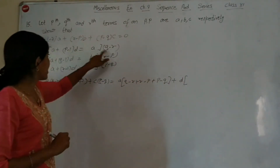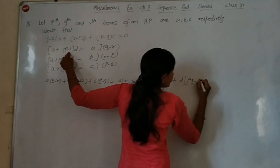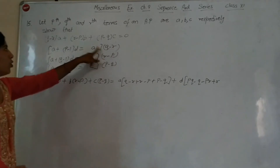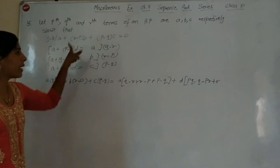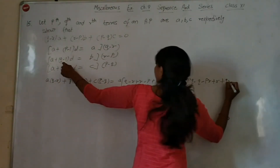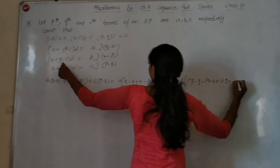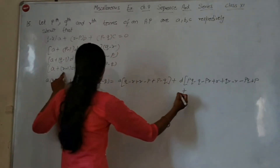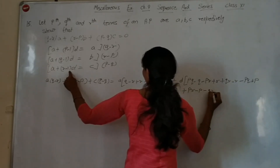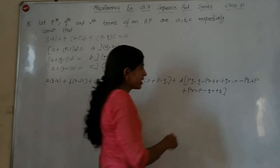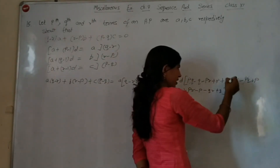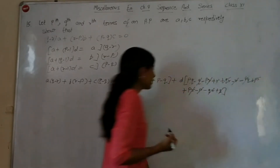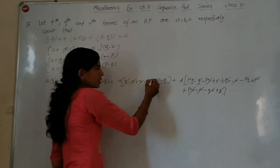On the left-hand side, taking 'a' (the first term) common: a[(Q-R) + (R-P) + (P-Q)] = 0. Taking 'd' (common difference) common from the remaining terms: d[P(Q-R) + Q(R-P) + R(P-Q)]. Expanding: PQ - PR + QR - PQ + PR - QR = 0. All terms cancel.